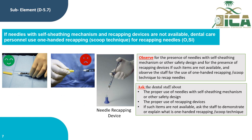Sub-element D5.7: if needles with self-sheathing mechanisms and recapping devices are not available, dental care personnel use the one-handed recapping scoop technique for recapping needles. The auditor should observe for needles with self-sheathing mechanisms or other safety designs, and ask dental staff about proper use of self-sheathing needles and recapping devices.